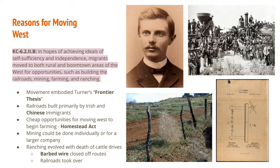Mining could be done individually or for a larger company, and boom towns were created as we saw in the last lecture. Ranching evolved with the death of cattle drives — barbed wire closed off routes and the railroads took over, making it a cheaper alternative to physically driving cattle from Texas to Kansas to Illinois.